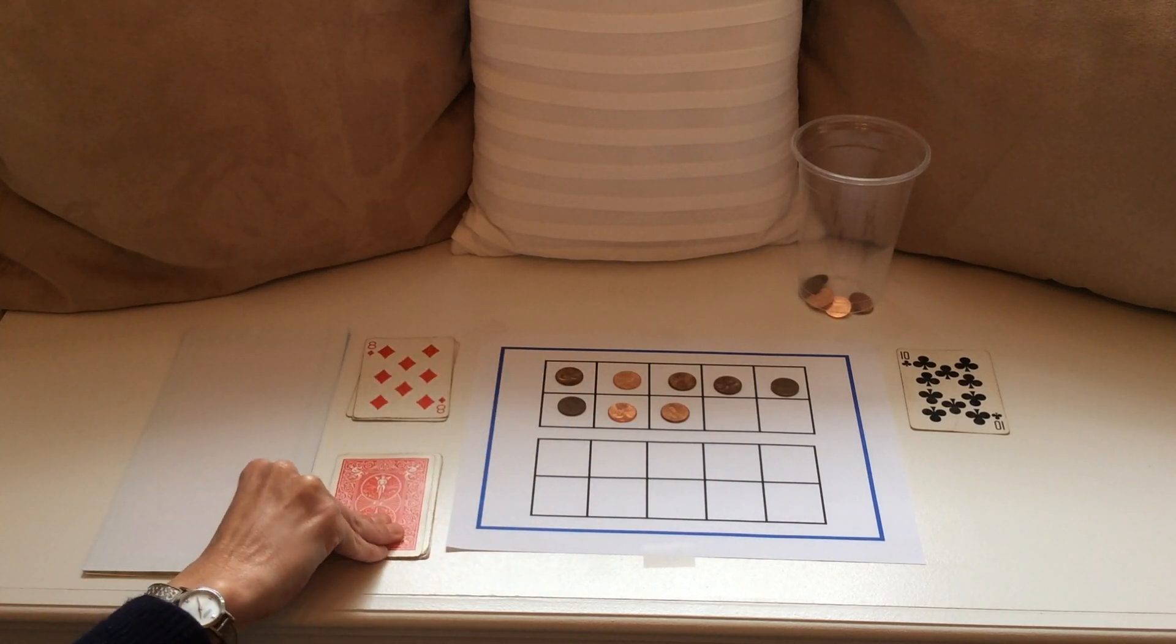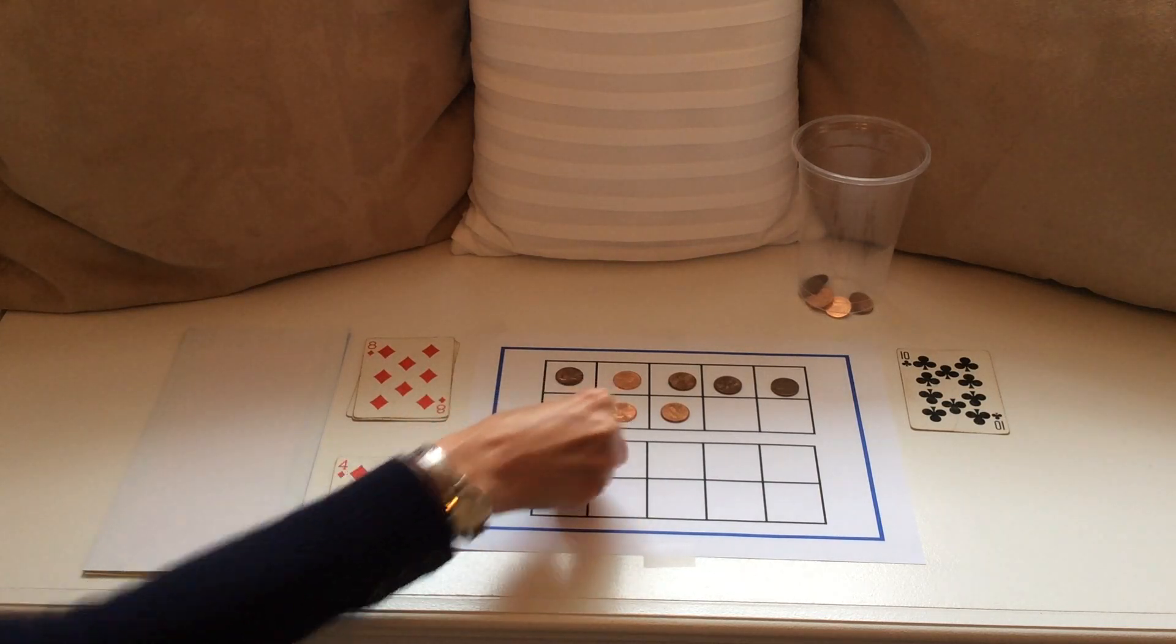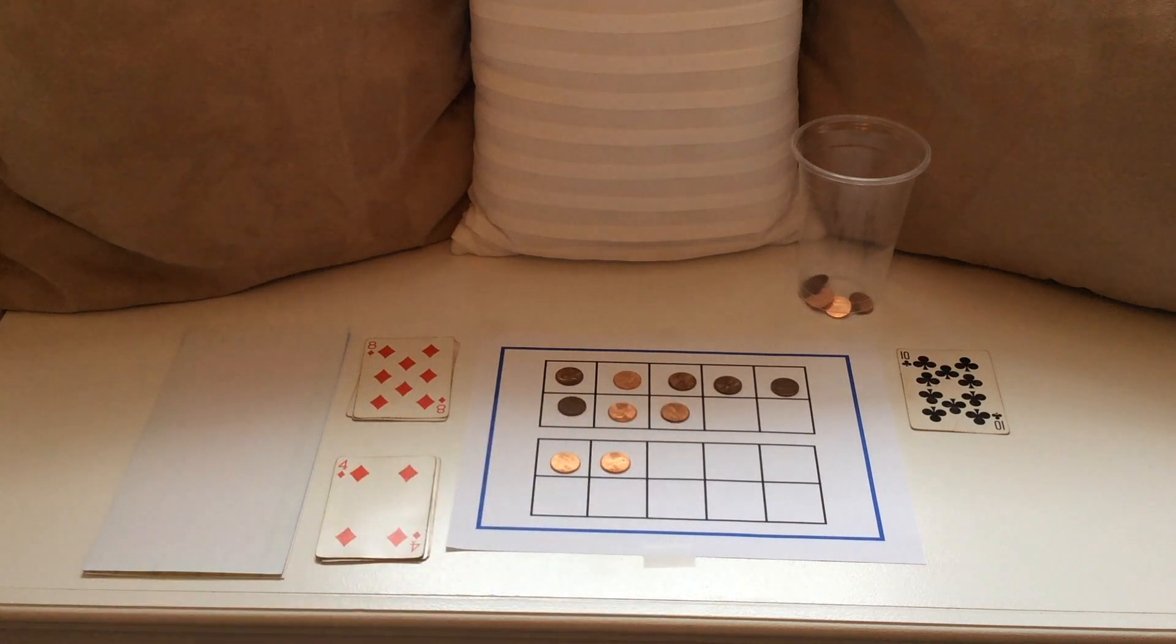Now I'll flip over the second addend. Our second part is 4. I'll represent 4 on the second 10 frame to show our second addend. 1, 2, 3, 4.